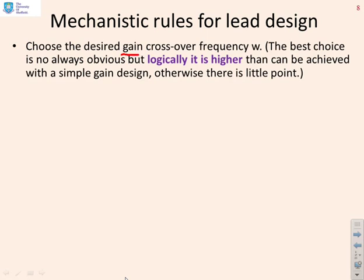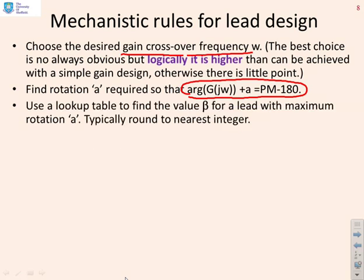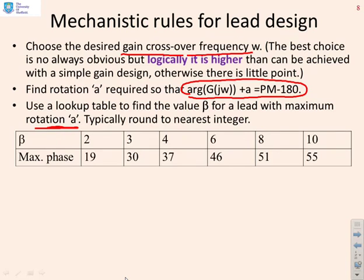Here's the mechanistic design procedure. Step one: choose the desired gain crossover frequency. The best choice is not always obvious, but logically it's going to be higher than what you can get from a simple gain design, because you're trying to increase the bandwidth. Step two: find the rotation required by solving the equation — the argument of G plus the desired rotation A equals the phase margin minus 180. Use a lookup table to find the value of β required. I recommend rounding β to the nearest integer. For example, β equals 2 gives 19 degrees, β equals 3 gives 30 degrees, up to β equals 10 giving 55 degrees.